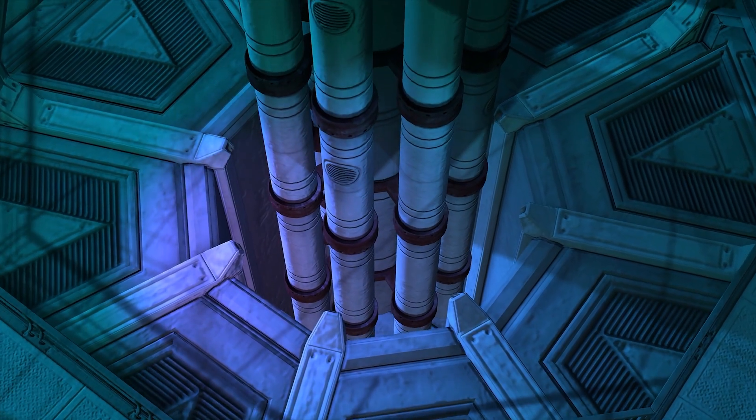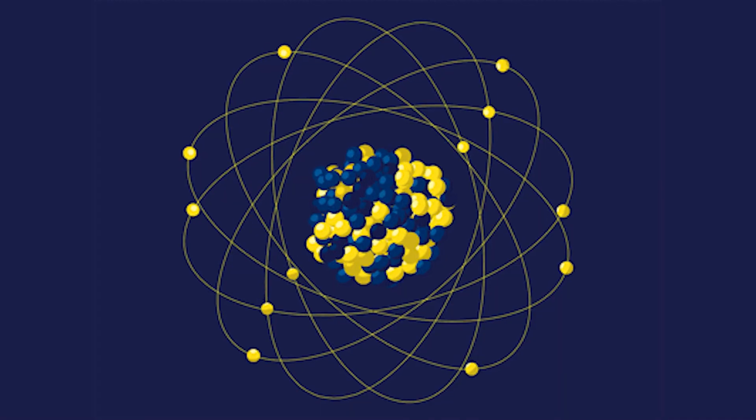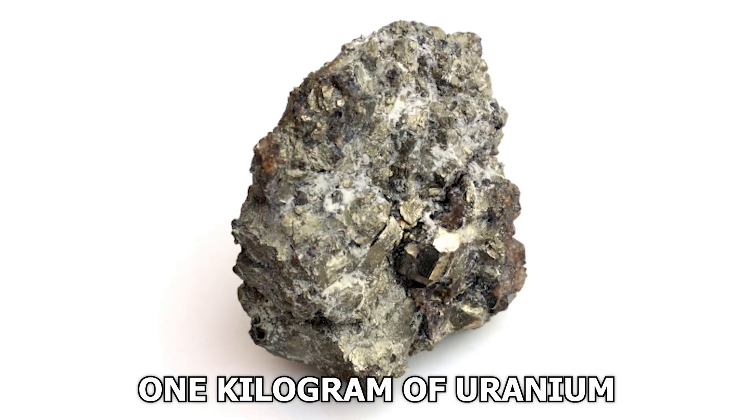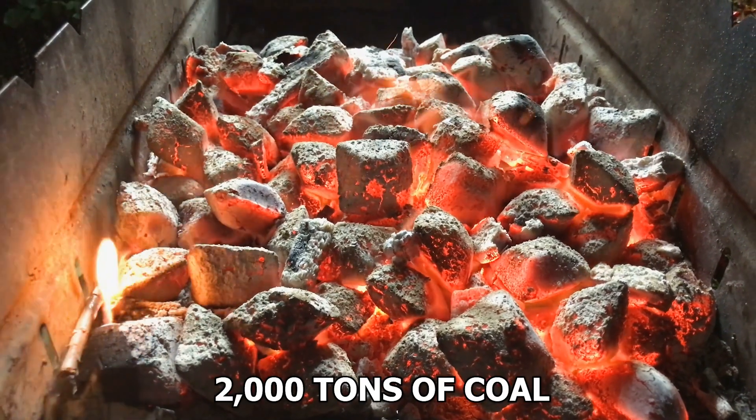Now the nuclear reactor magic: when uranium atoms split, they release an incredible amount of energy. To put it in perspective, one kilogram of uranium-235 can produce energy equivalent to burning 2,000 tons of coal. That's like extracting a powerhouse of energy from a relatively small amount of material.